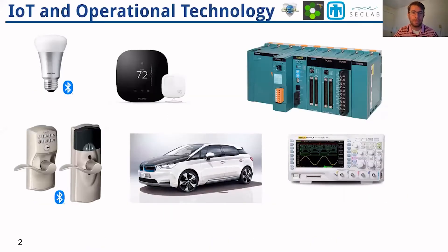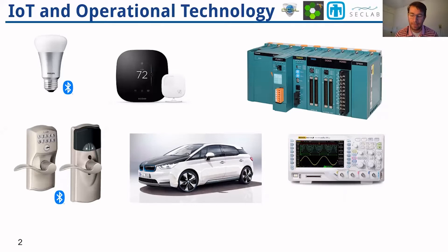If you think about the Internet of Things, we have millions of devices that we use throughout our lives that are interconnected and vulnerable. Vulnerabilities in these systems can compromise private information, destroy equipment, and disrupt our daily lives.